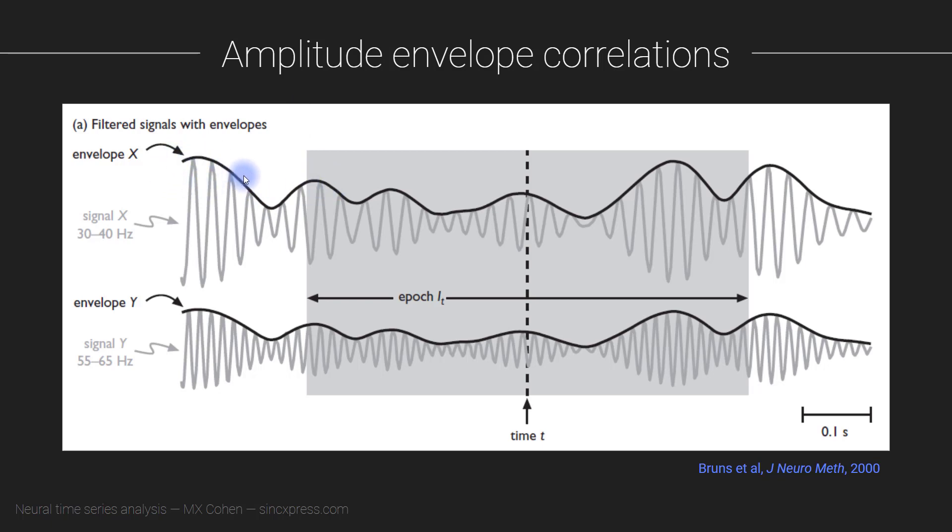So you obtain the time series of amplitude values for two different electrodes, and then you have these two time series and you simply correlate them. And it's as simple as that. And if you find that the correlation is significantly different from zero, then it means that the power fluctuations in these two electrodes are correlated—maybe they're positively correlated like what you see here, maybe they're negatively correlated, that's also possible.